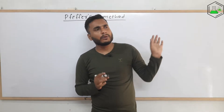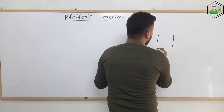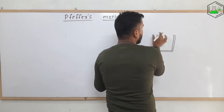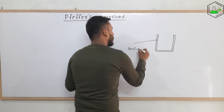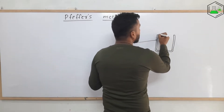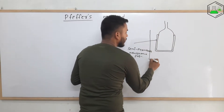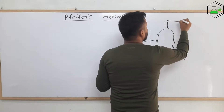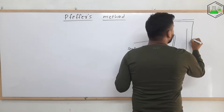Let me draw a simple diagram and we will understand everything along with it. He considered a pot, but it was a special type of pot because this wall is made up of semi-permeable membrane — a semi-permeable membrane pot. This is connected to a tube, and this whole pot is put in a big container. From here there is an outlet which is sealed, and this outlet is further connected to a manometer.